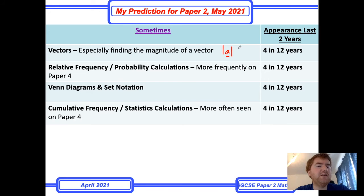Occasionally they have relative frequency and probability calculations. Generally, probability questions are done on Paper 4, but they might put a small relative frequency question in. Venn diagrams and set notation will come up probably in some way on Paper 2 or Paper 4. Be aware of that.